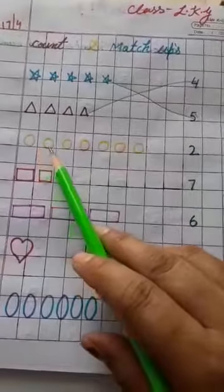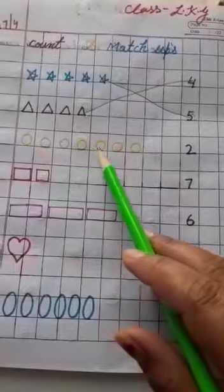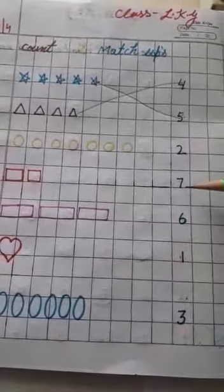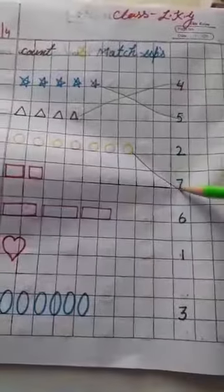One, two, three, four, five, six, seven. Two, seven. Match.